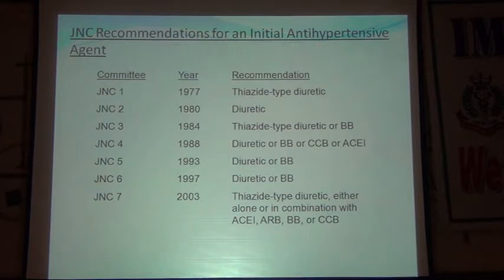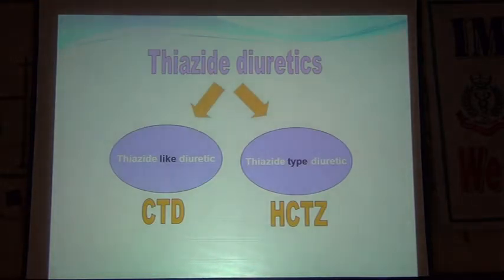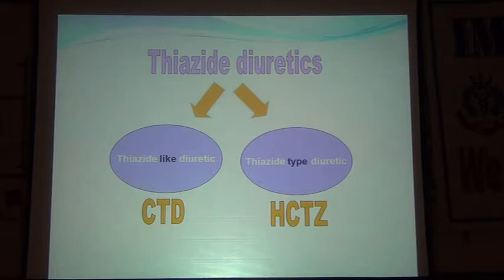From JNC1 in 1977 to JNC7 in 2003, diuretics appear in almost all recommendations. What is recommended is thiazide-type diuretics. In JNC7 they stated that thiazide-type diuretics, either alone or in combination, can be used. The distinction is between thiazide-type diuretics — which include chlorthalidone and indapamide — versus thiazide diuretics.